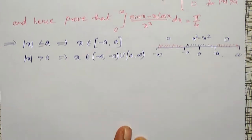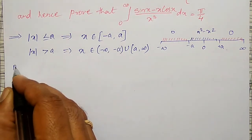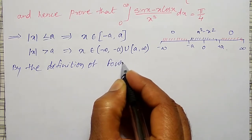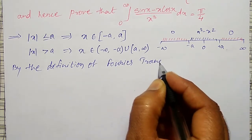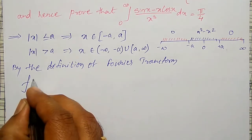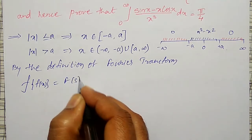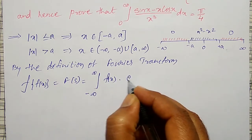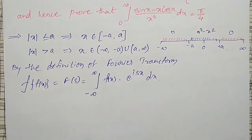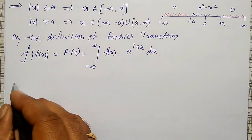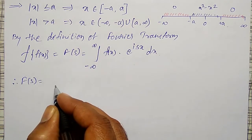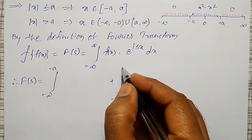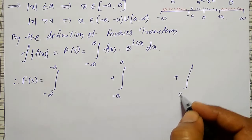Now, the Fourier transform is given by the definition: Fourier transform of f(x) equals F(s), and it is the integration from minus infinity to plus infinity of f(x) into e^(isx) dx. I will split this integration into three terms: integration from minus infinity to minus a, plus integration from minus a to plus a, plus integration from a to infinity.